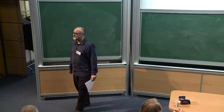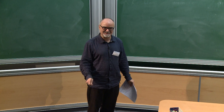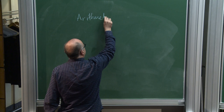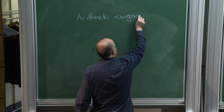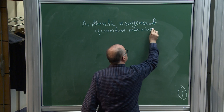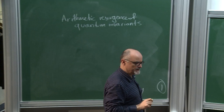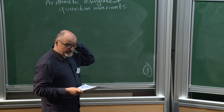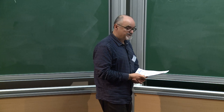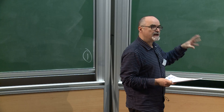I want to tell you about arithmetic resurgence of quantum invariants — by that I mean quantum invariants in dimension 3, such as knot invariants or 3-manifold invariants. I will actually not talk about 3-manifolds so much. Resurgence is a property of formal power series, their analytic continuation, and their expansion near singularities where the original power series emerges or resurges.